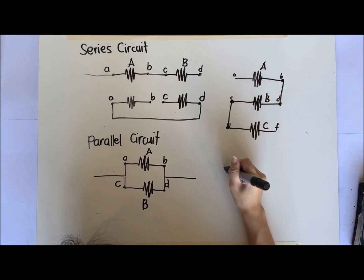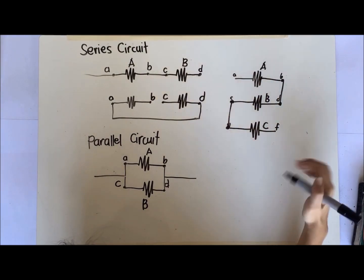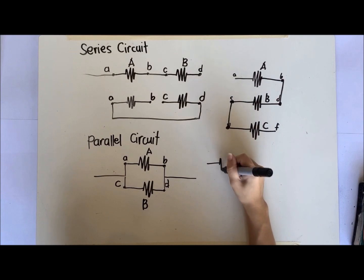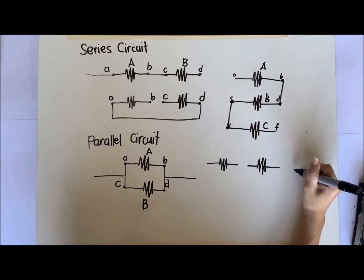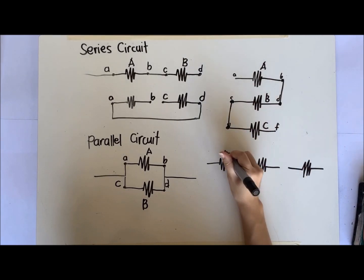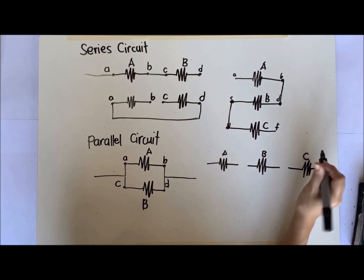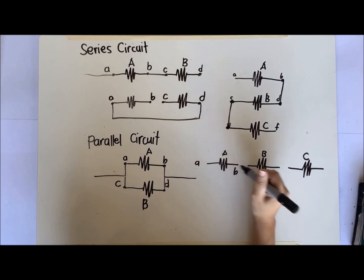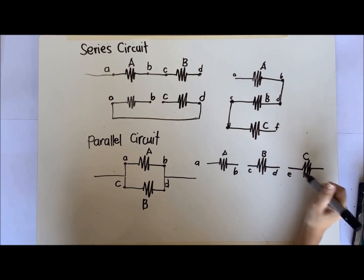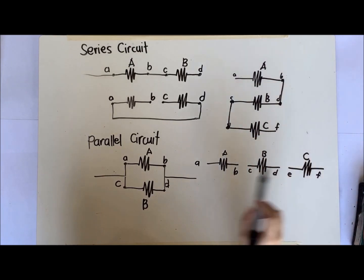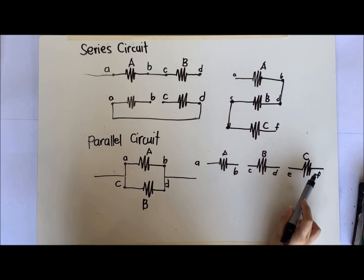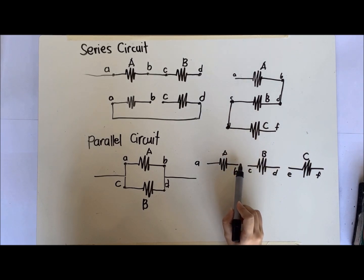It's also possible that your resistors are in a row. Let's say this is resistor A, resistor B, resistor C. So you have terminals A, B, C, D, E, F. But to show you that even if they're in a row, I can connect this in parallel. Remember, each of the two terminals of one resistor must be connected to the two terminals of another resistor.